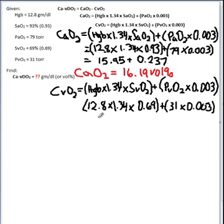I multiply my hemoglobin of 12.8 times 1.34 times 0.69 for the venous saturation, and then add the venous saturation of 31 times 0.003. And then I calculate those.